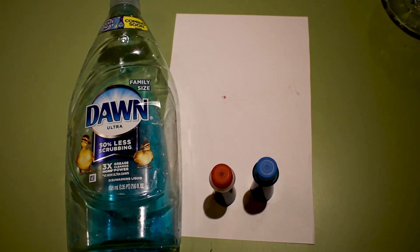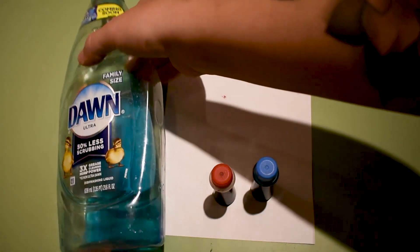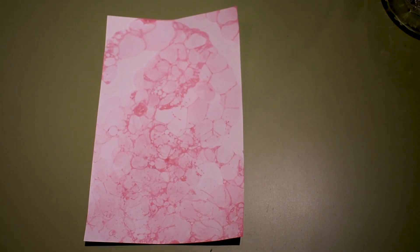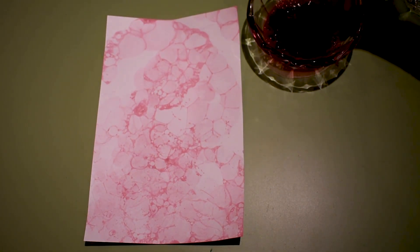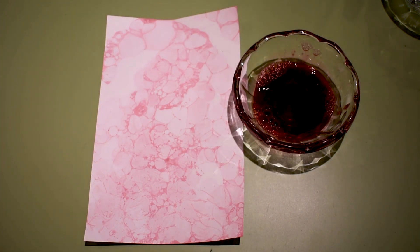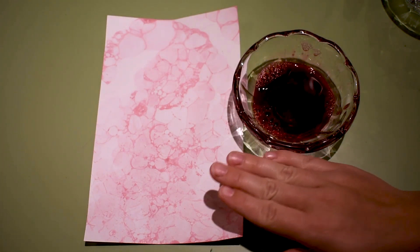To start we're going to be making our print mixture which is soap, water, and food coloring. I went ahead and started and made my first concoction already and I did red which gives you this nice pink color when you add it.